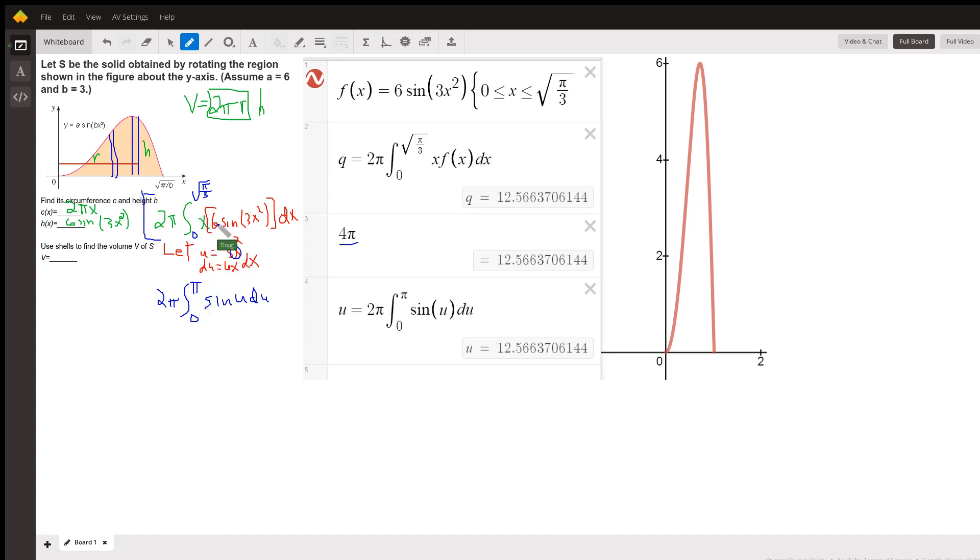6x dx—those factors right there equal du—and 3x² equals u. That's how we get from this to sin(u) du.